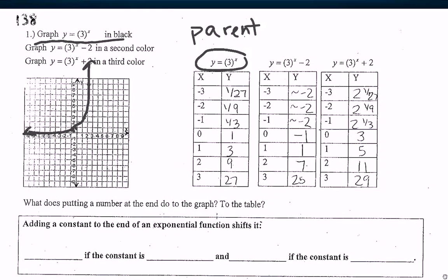So I have negative 3, negative 2. Let me redo that point. I have negative 2, negative 2, negative 1, negative 2, and then 0, negative 1, and 1, 1, and 2, 7. So that one looks like that.